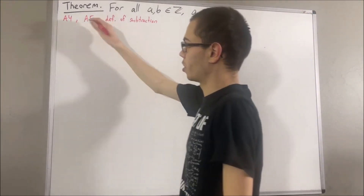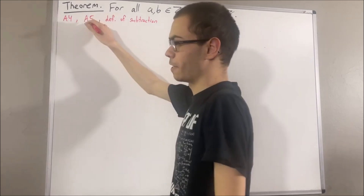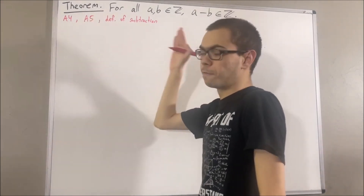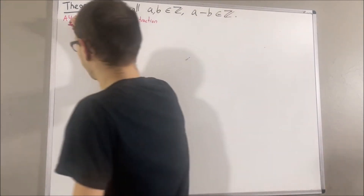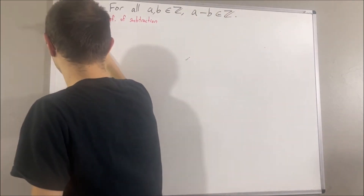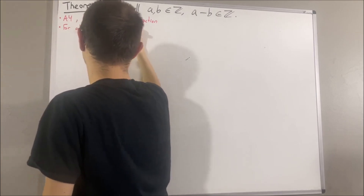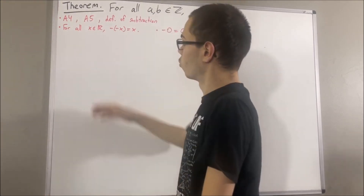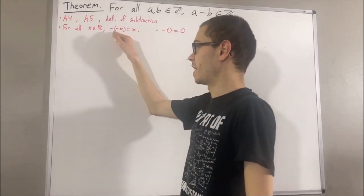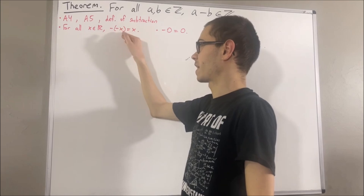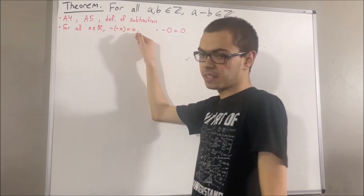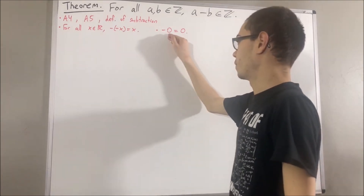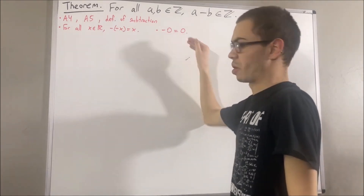Also, in regards to the negative of a real number, we have proven the following results: for all real numbers x, the negative of negative x is equal to x, and we have proven the negative of 0 is equal to 0.